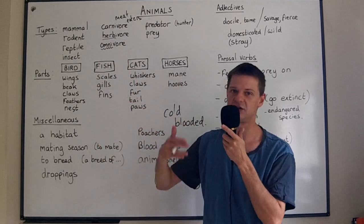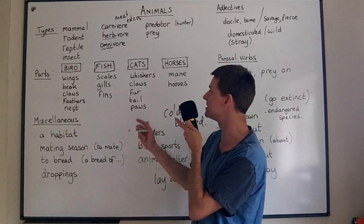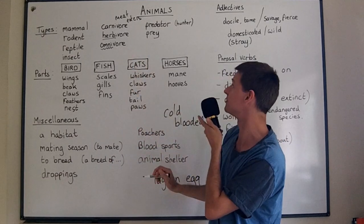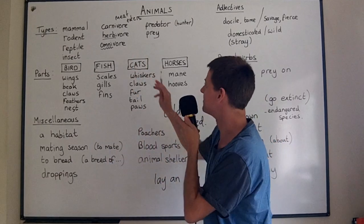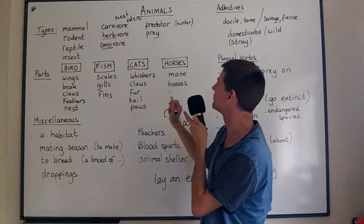An omnivore means it eats everything — it eats vegetation, it eats meat. So people are omnivores. Well, some people. Some people are herbivores.